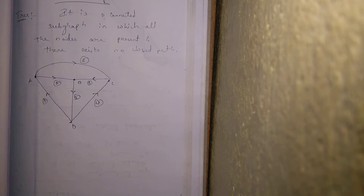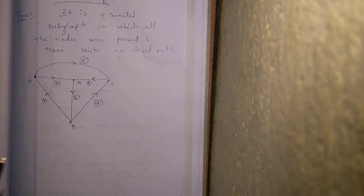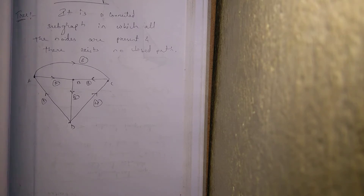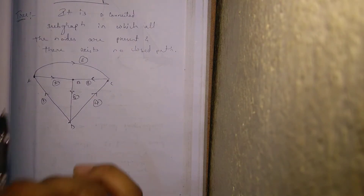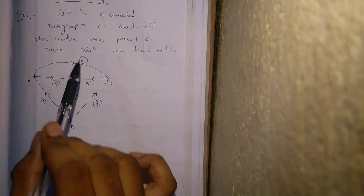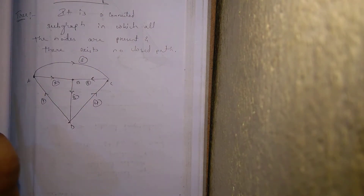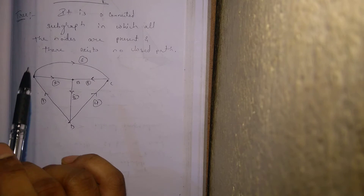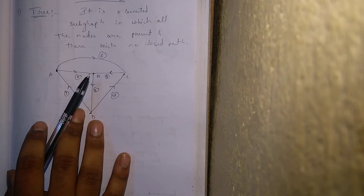So what do you mean by tree? It is a connected subgraph in which all the nodes are present — every node must be present, and all the nodes should be connected together. Each node should have access to every other node, and there should not be any closed path. From this graph, how many trees can I possibly draw?